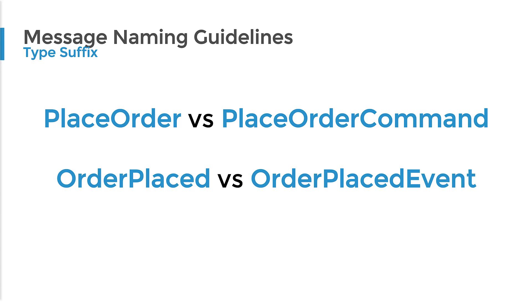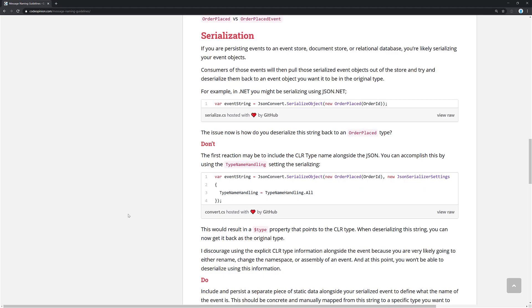The second-to-last thing I want to touch on is the actual naming of your types or classes — specifically whether to suffix them with the word 'command' or 'event'. To me, this is personal preference — whether you use 'place order' or 'place order command', or 'order placed' or 'order placed event'. My only concern is consistency. If you choose to suffix one or the other, or both, just do it consistently. Everyone will find it much easier to locate relevant commands and events.